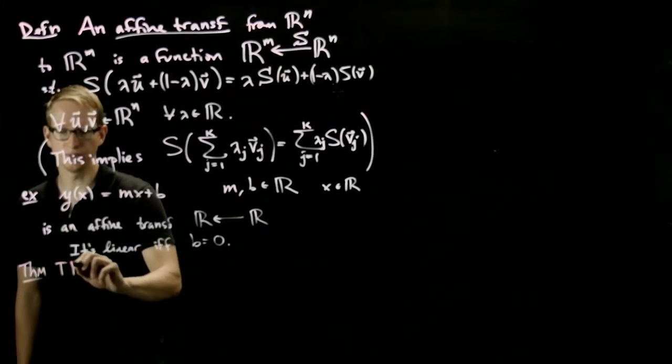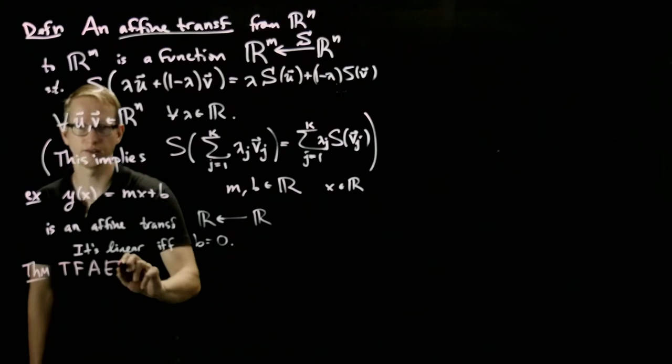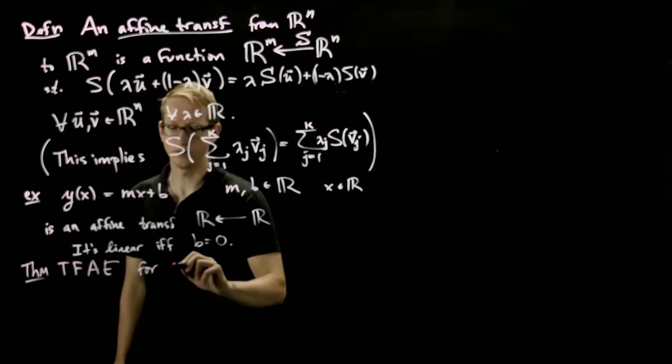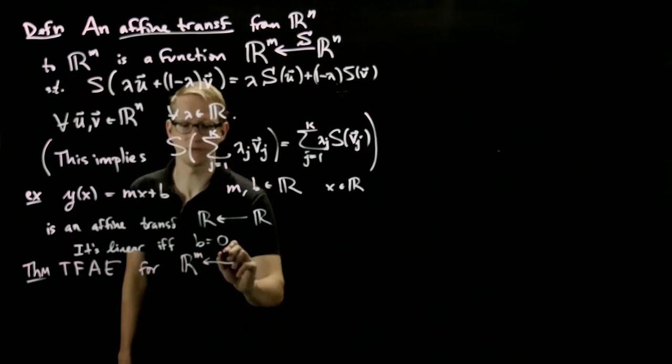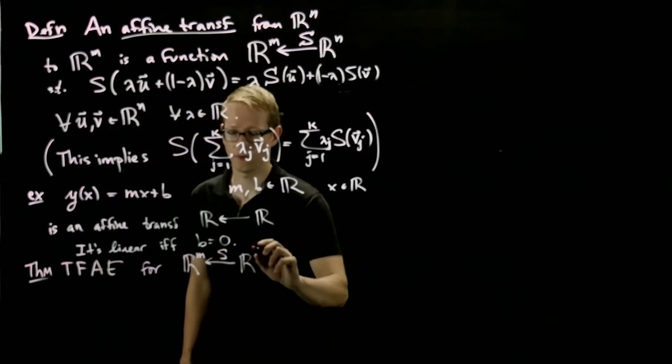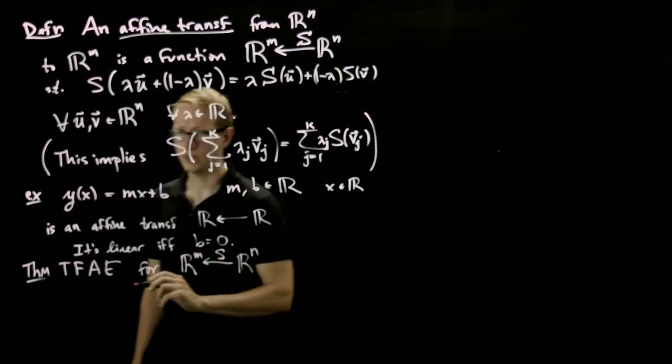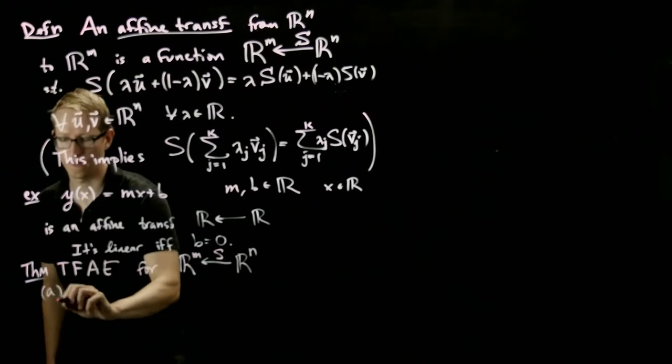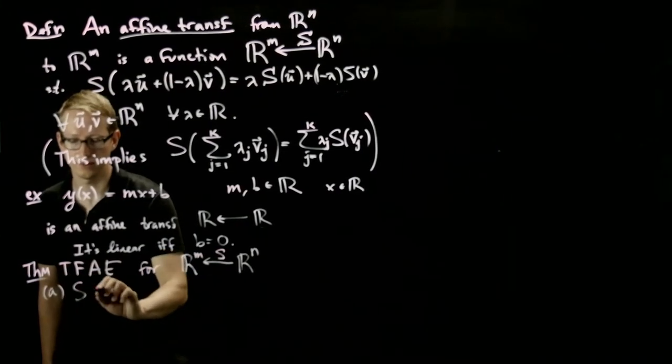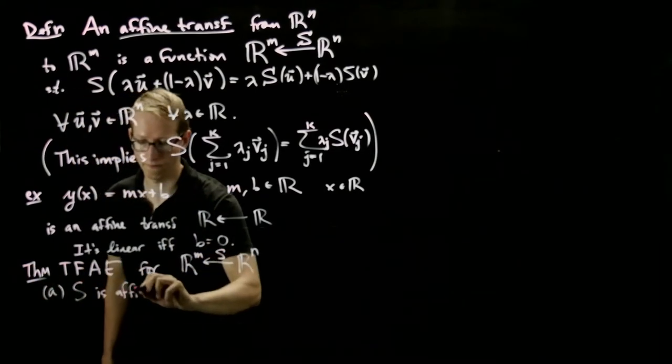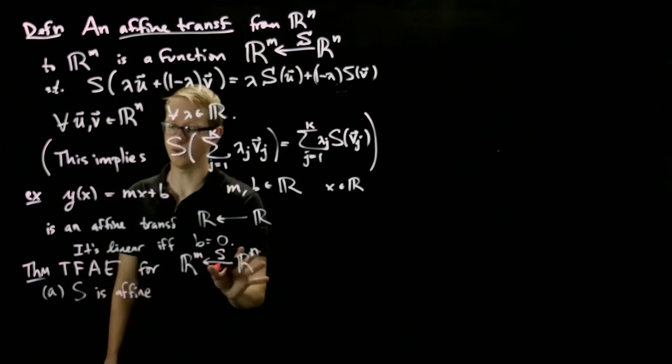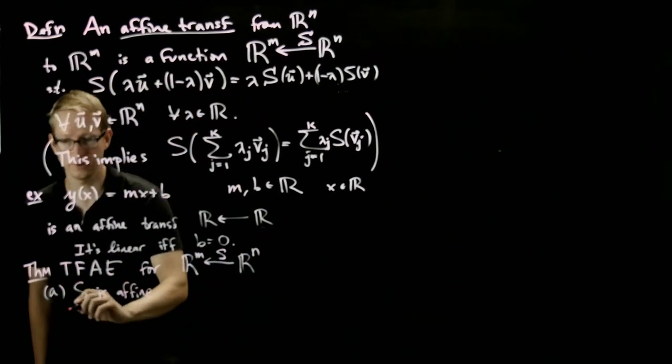So the theorem says the following are equivalent for a function. Now we're just describing a function. These conditions are that s is affine, is an affine transformation.